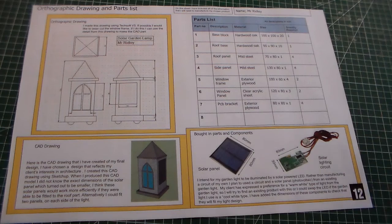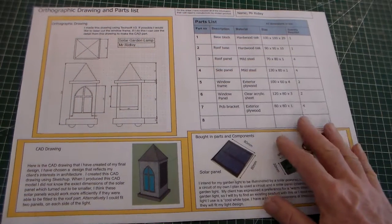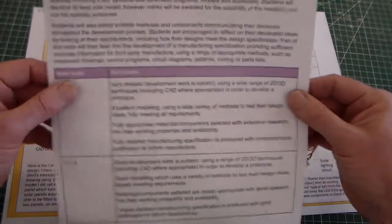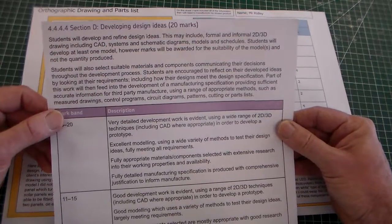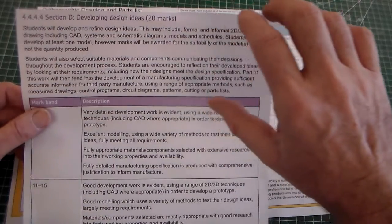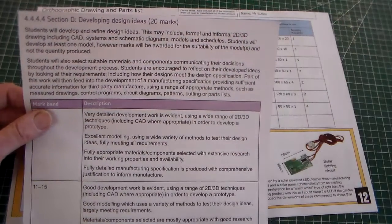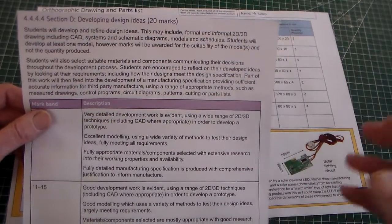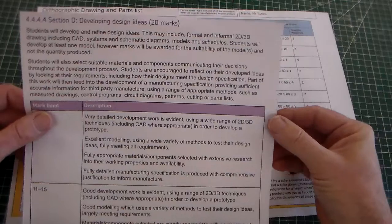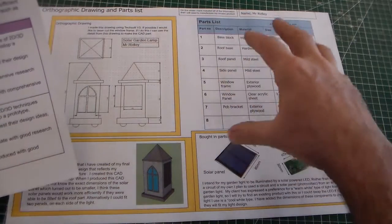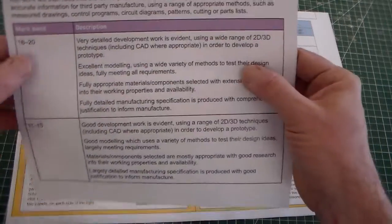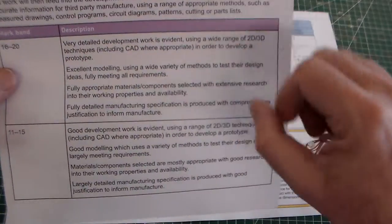This is sheet number 12, part of section D: developing ideas. There are 20 marks for this section, which is as many marks as there are for making the product in the realisation section. It's very important to maximize these marks and try to reach the top band.